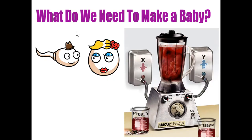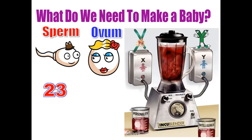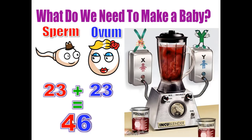Let's start by fertilization. But before talking about fertilization, what do we need to make a fetus or a baby? We need a sperm and we need an ovum. The sperm contains 23 chromosomes, which are called the haploid number. The ovum also contains 23 chromosomes. When they fuse, they will form the zygote, which contains 46 chromosomes — 23 from the father and 23 from the mother.